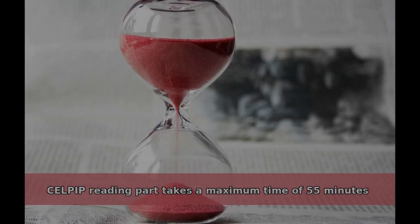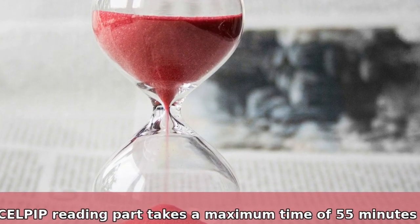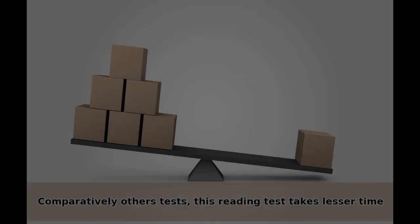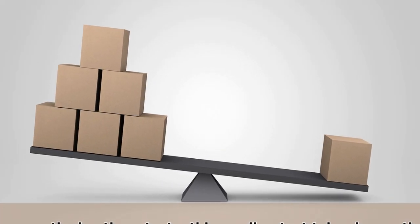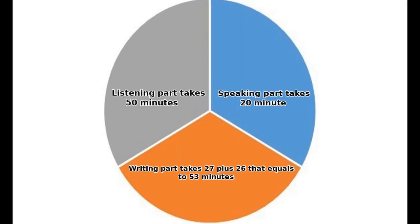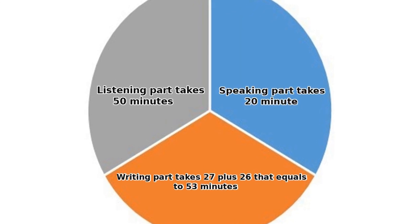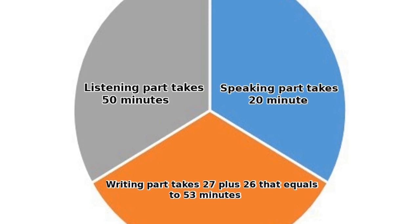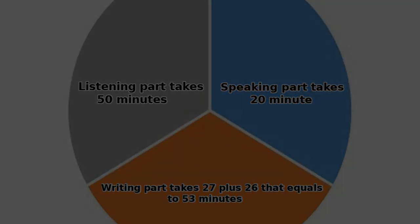CELPIP reading part takes a maximum time of 55 minutes. Comparatively, other tests, this reading test takes lesser time. For example, listening part takes 50 minutes, speaking part takes 20 minutes and writing part takes 27 plus 26 that equals to 53 minutes.